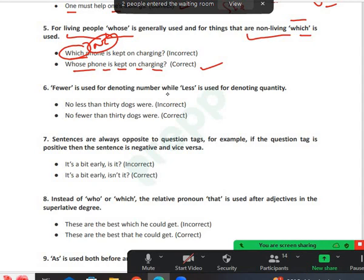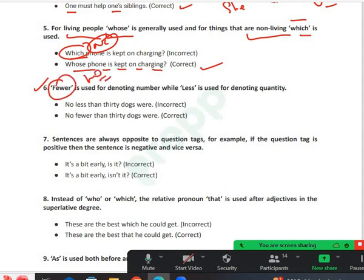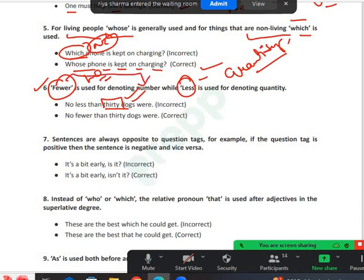Moving to the sixth point: 'fewer' is used for denoting number while 'less' is used for denoting quantity. For example, no less than thirty - this is incorrect because thirty is a number. The correct form is: no fewer than thirty dogs were present. We use fewer for number and less for quantity. Clear? Yes sir.